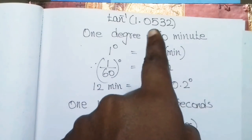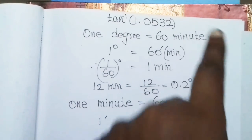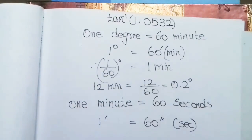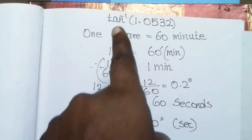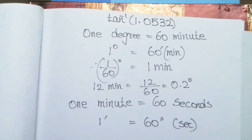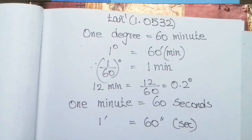Tan inverse of 1.0532. These values are fine. You can use tan inverse. So, 1.0532 is in terms of degrees and minutes, or just degrees.